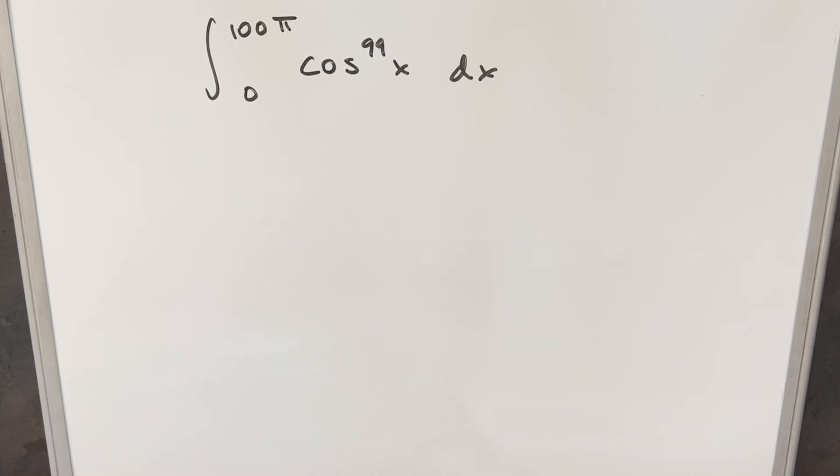Okay, we have something different here today. We've got the integral from 0 to 100 pi of cosine to the 99th x dx. So for this one, what I had in mind is I'm actually going to do five methods or six methods, but I'm doing all really fast methods.